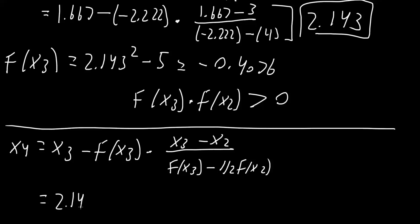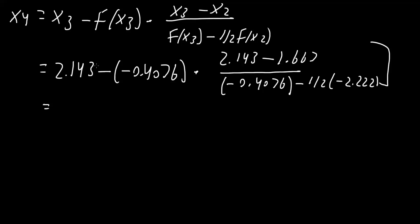So 2.143 minus parentheses negative 0.4076 times x3. So we had 2.143 minus 1.667 divided by negative 0.4076 minus one-half parentheses negative 2.222, like this. And when we plug this into a calculator, we would get 2.419. And so this right here is the third iteration.